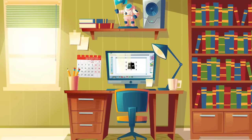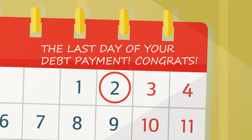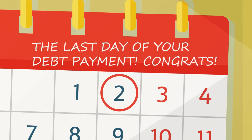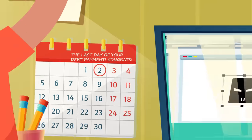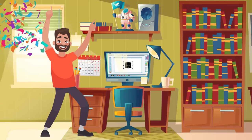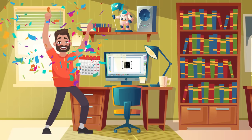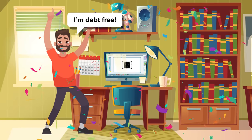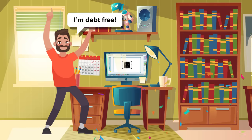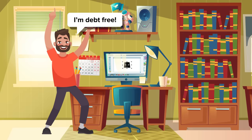In general, Chapter 13 debtors must petition with repayment plans that can take between three to five years to pay off. Once the years of repayment are completed, the record of the Chapter 13 bankruptcy stays on the debtor's credit report for seven years. During the three-to-five-year repayment process, the debtor isn't allowed to incur any more debt, such as a new vehicle loan, without court approval. Debtors must also maintain insurance on any collateral or properties.